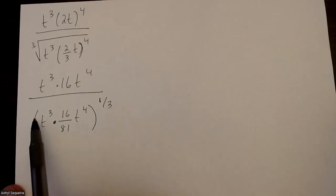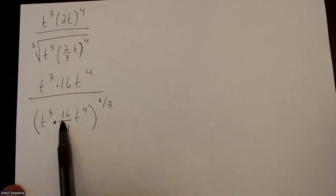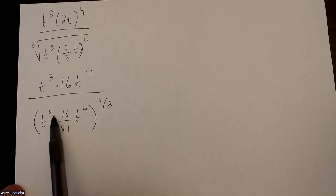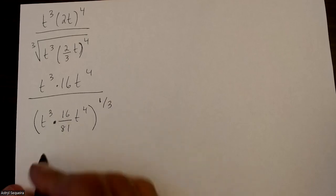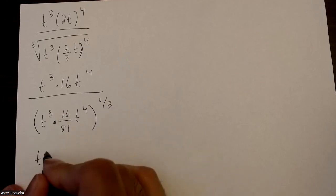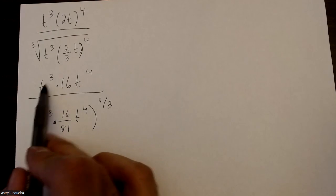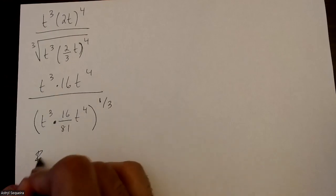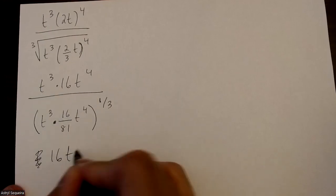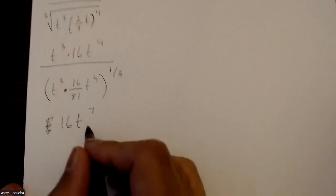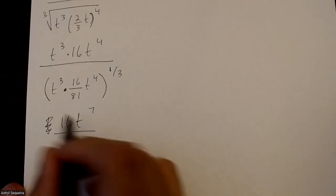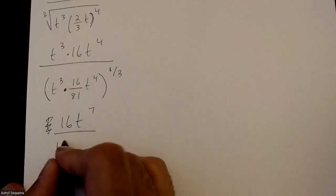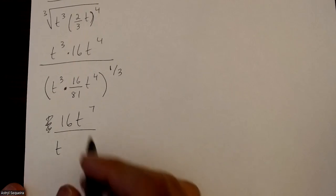Now I'll distribute this 1 over 3 into the bracket, so 3 times 1 over 3 is just 1. On the top, I can also combine t cubed times t to the 4 — that's just going to be 16t to the 7. And t cubed to the power of 1 over 3 is just t, because it's t to the power of 1.